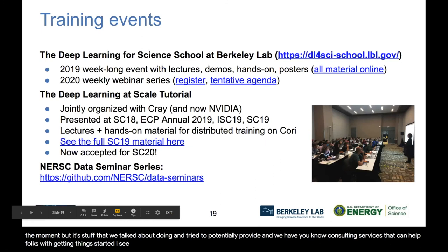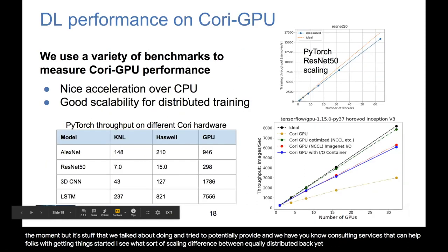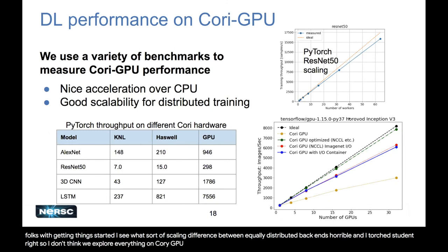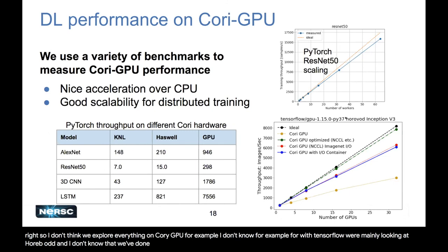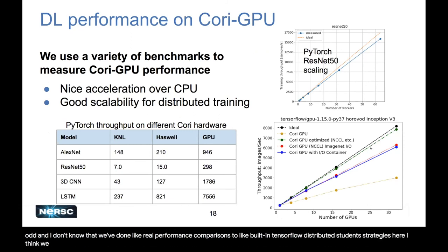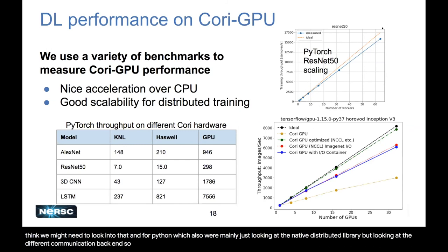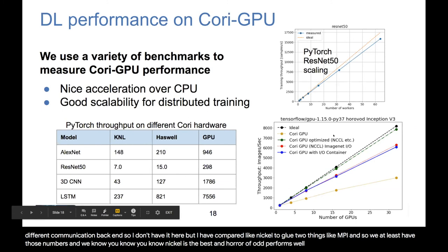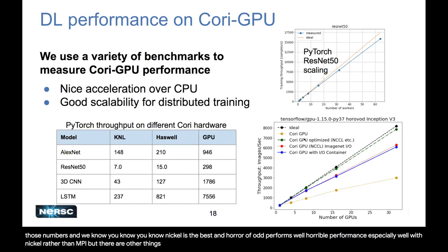Question: What sort of scaling difference have you seen between different distributed backends, like Horovod and PyTorch distributed? For TensorFlow, we're mainly looking at Horovod, and we haven't done real performance comparisons to built-in TensorFlow distribution strategies. For PyTorch, we look at the native distributed library with different communication backends. We've compared NCCL to Gloo to MPI — NCCL is the best, and Horovod performs well, especially with NCCL rather than MPI.